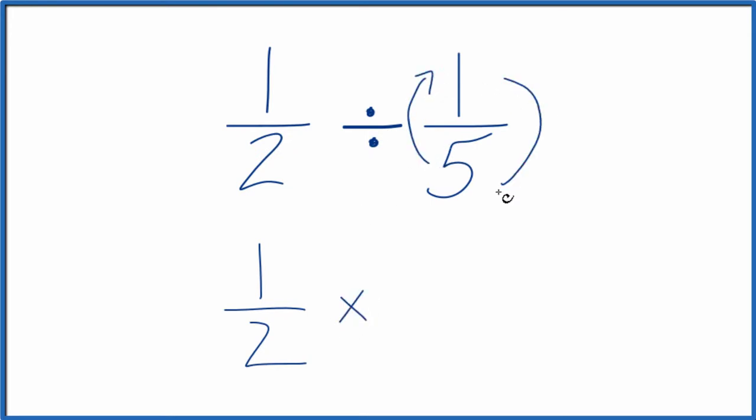We move the 5 up here and the 1 down here, so we have 5 over the 1. So we're just going to multiply 1 half by 5 over 1. 1 times 5, that's 5. 2 times 1, that's 2.